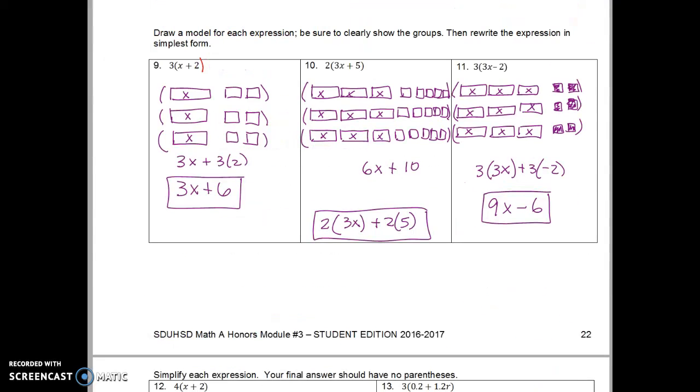Okay, so here are my answers and my models. Make sure that your partner has parentheses around each group. Make sure that your partner has labeled each x tile. And make sure that your partner has two negative tiles in number 11, two negative tiles in each group. That's important. Alright, now here are my simplified answers, 3x plus 6. But what I want you to look at is this line. I have three groups of x and three groups of 2, which gives me 3x plus 6.